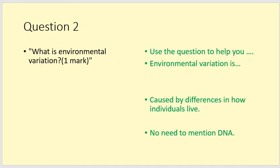The first question you had was: what is environmental variation? The trick here is not just to read 'variation', but to get the qualifying word 'environmental' in there as well. Environment is what is around you — whether it's hot, cold, whether you've got lots of food, whether you're on your own, whether you're part of a group. You can use the question to help you; it's a question in a sentence, so the answer should be in a sentence. Environmental variation is differences caused by differences in how individuals live. You do not need to mention DNA. It is your response of an organism to the environment around it, not the response that every organism will have that is identical due to DNA. It is about the specific circumstances around it in the environment.